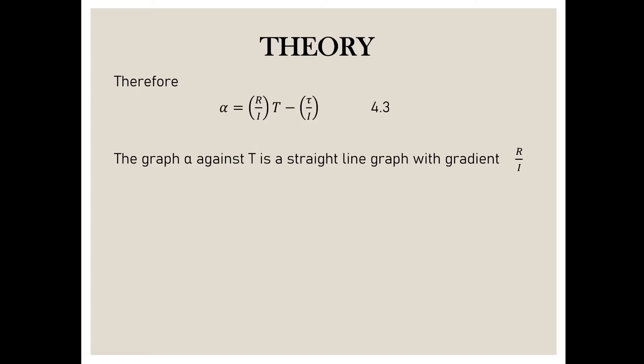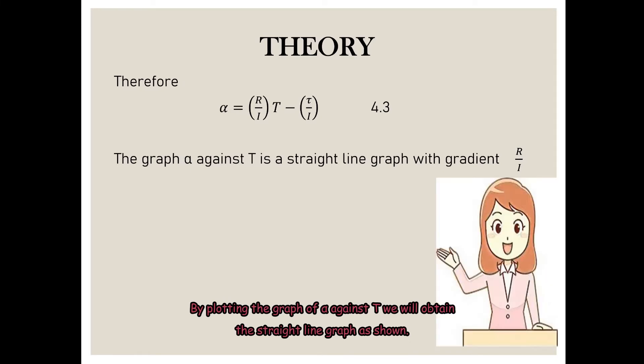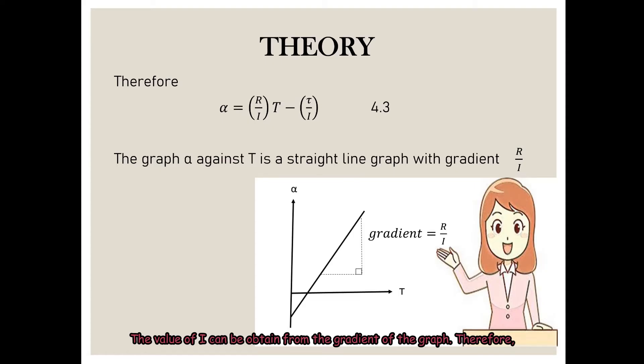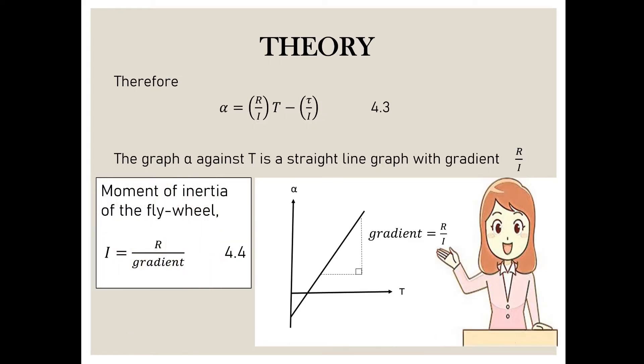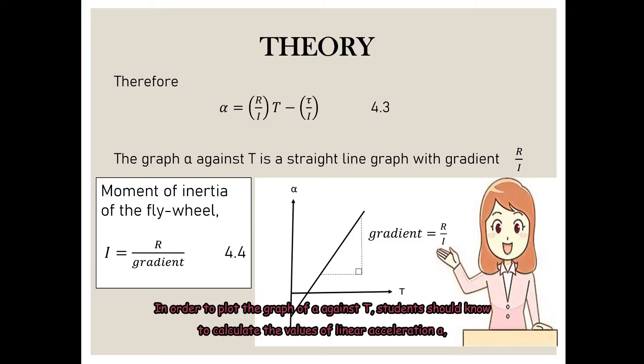Therefore, alpha equals RT over I minus tau over I. By plotting the graph of alpha against T, we will obtain a straight line graph as shown. The value of I can be obtained from the gradient of the graph. Therefore, I equals R over gradient.